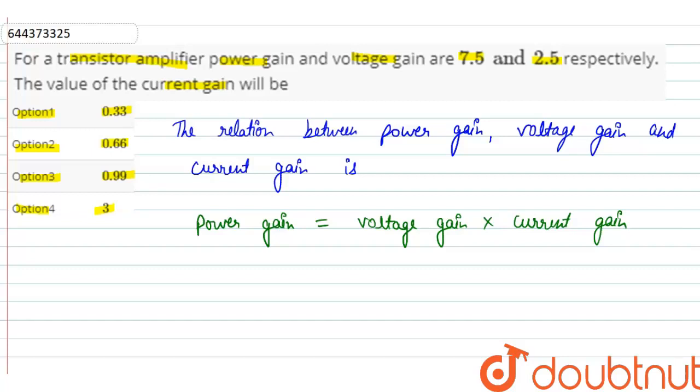So we have power gain is 7.5 and voltage gain is 2.5. Therefore, 7.5 equals 2.5 times current gain. Current gain equals 7.5 divided by 2.5, which is 3. Option 4 is the correct answer.